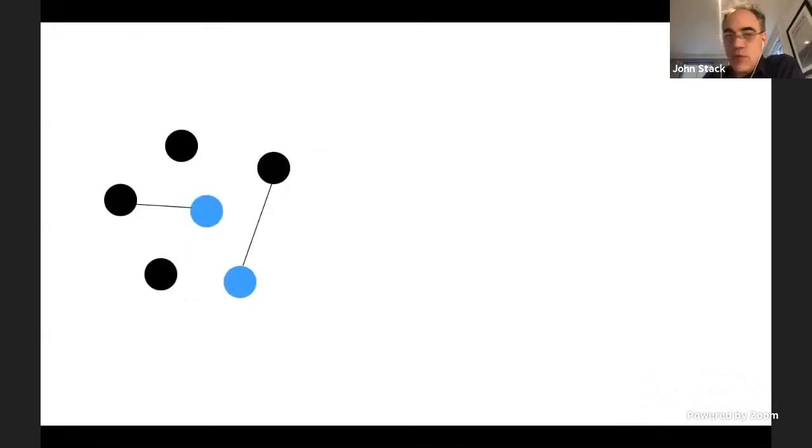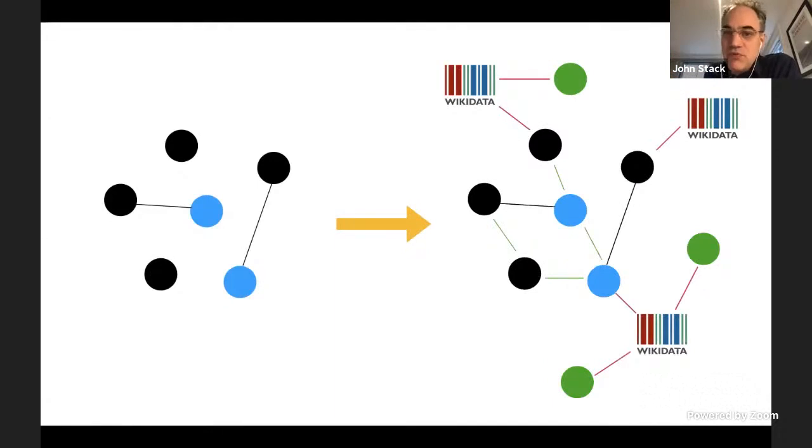So fundamentally what we're doing is we're moving some from something that looks like this. So the stuff in our collection with relatively small number of links between it to something that's much more richly interlinked and contains links to other places. And we can then build on top of that.